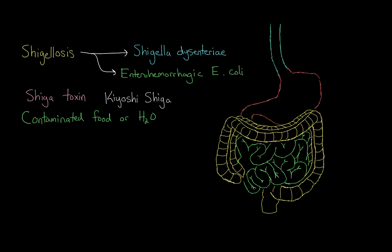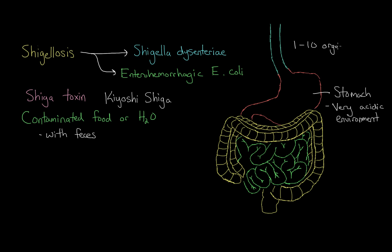People usually contract the infection when they eat contaminated food or water — usually contaminated with feces. When you eat this, the bacteria will first enter your stomach. Ordinarily the stomach has a very acidic environment, but these bacteria are very sturdy and can actually survive past that acidic environment. In addition, you only need about 1 to 10 organisms to cause an infection, so it's very infectious.